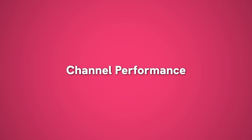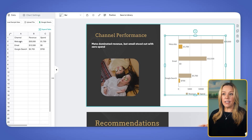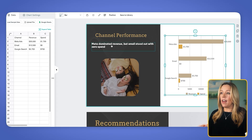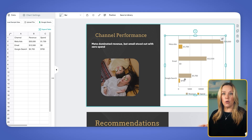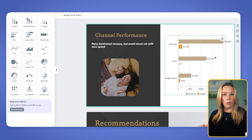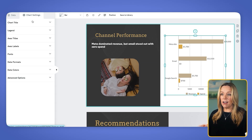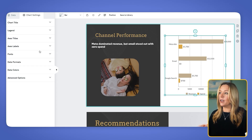For our next slide, I want to talk about channel performance, and this is a great place to use a chart. I added a bar chart and added my data — my channel names, my revenue, and my spend. So I can see that Meta was my largest sales driver and email did really well without any spend, while Google underperformed. It makes it so visual and it's so easy to set up. I simply had to add that data and then manage the settings for titles, labels, and fonts right within the slide.